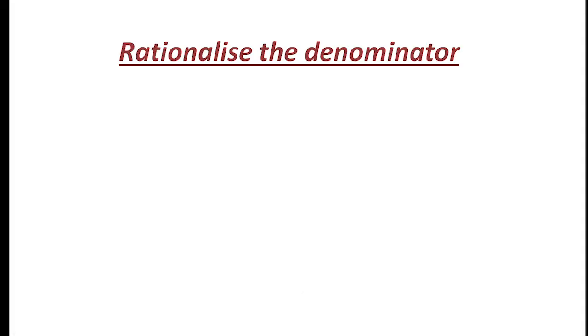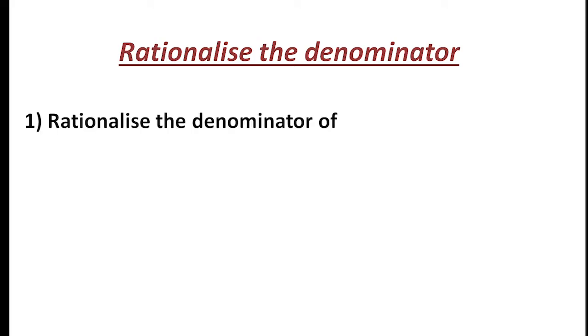Hi students, today we will discuss how to rationalize the denominator. The denominator will have a radical sign and we have to rationalize it. After rationalizing, the denominator will be an integer. That is the way we have to make it.